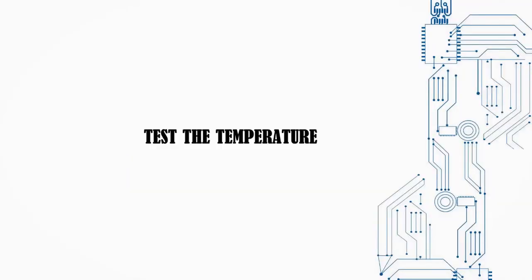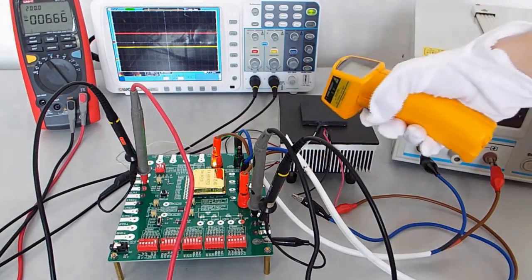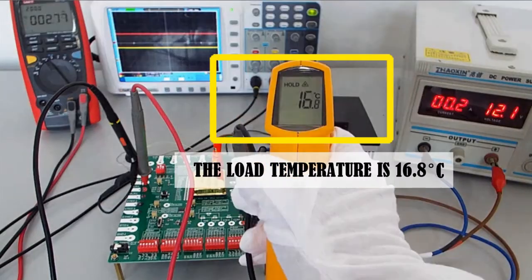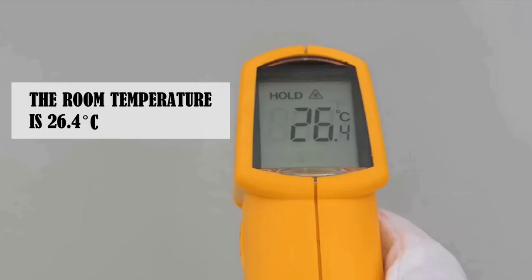Test the temperature. The temperature of the cold end of the equipment is 16.8 Celsius degrees. It means the load temperature is 16.8 Celsius degrees as well. The room temperature is 26.4 Celsius degrees.